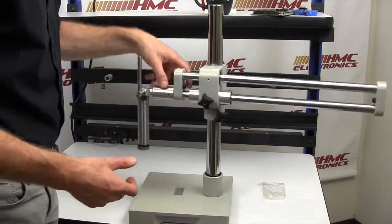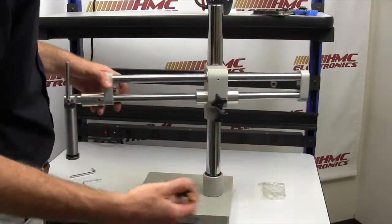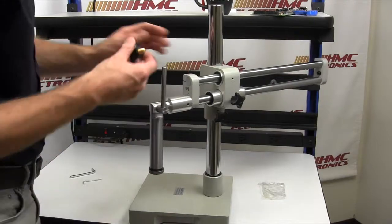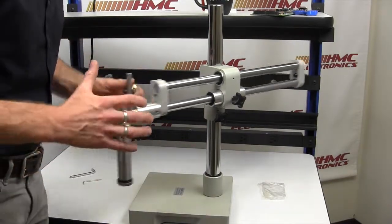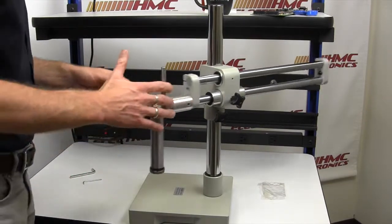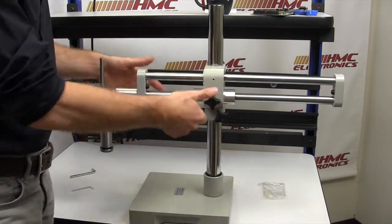And I haven't tightened the final locking collar here, but you can get an idea of just the full fluid range of motion that you get with the dual arm boom stand versus the standard single arm. So it is now fully assembled.